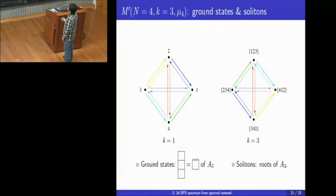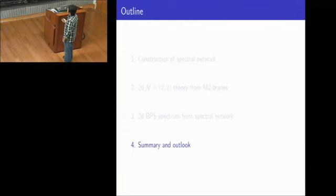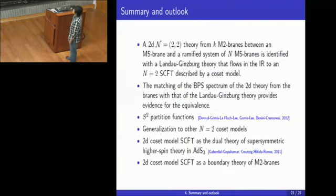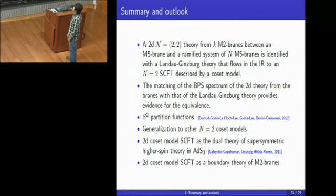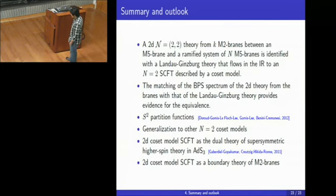This is the description of how we can get the 2D BPS spectrum. Let me summarize: the claim was that the 2D N=(2,2) theory from multiple M2 branes between a flat M5 brane and a ramified system of an M5 brane wrapping a Riemann surface can be identified with the Landau-Ginzburg theory that flows in the IR to an N=2 superconformal field theory described by the Kazama-Suzuki coset model. As one of the main pieces of evidence, I described how we can obtain the BPS spectrum of the 2D theory from the brane configuration, and the result matches nicely with the 2D BPS spectrum of the Landau-Ginzburg model. There is another story regarding the calculation of S² partition functions for these 2D theories, but let me defer the explanation to the upcoming paper.